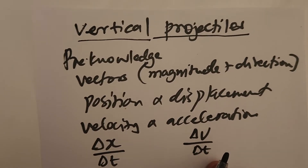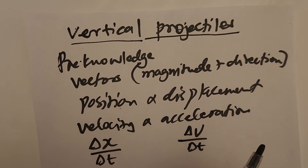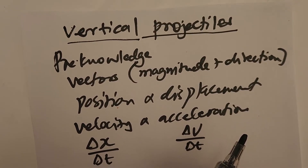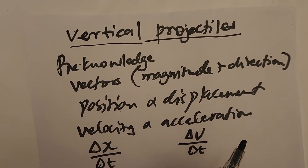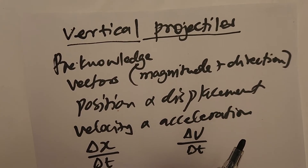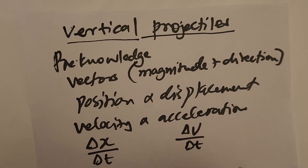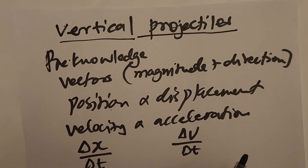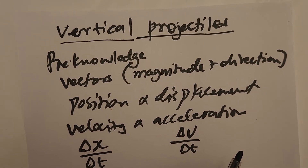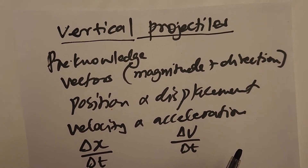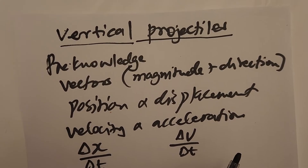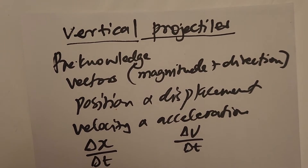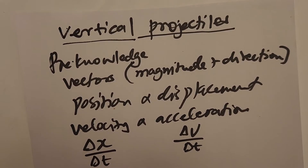We learned about the description of motion: motion might be accelerating, moving at constant velocity, or undergoing a decrease or increase in velocity. These types of motion are very important, especially when it comes to graphs.